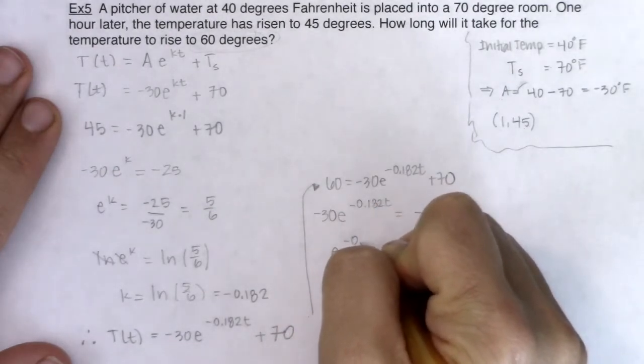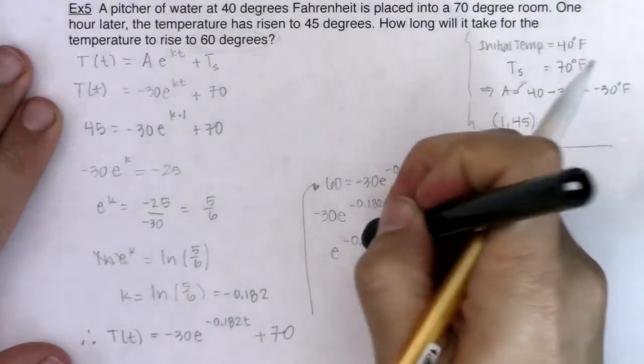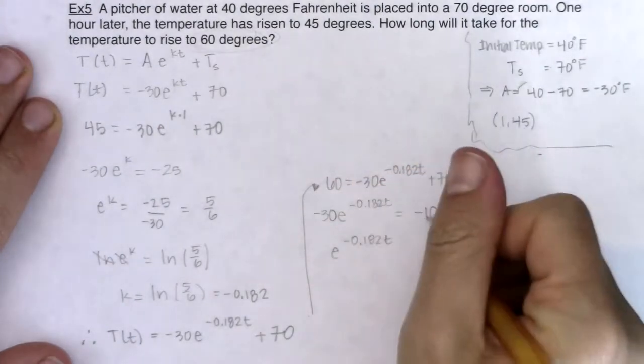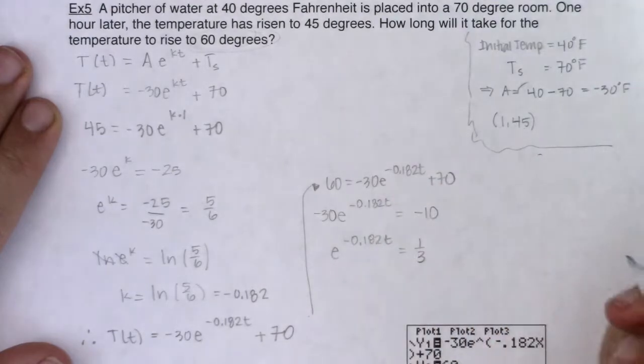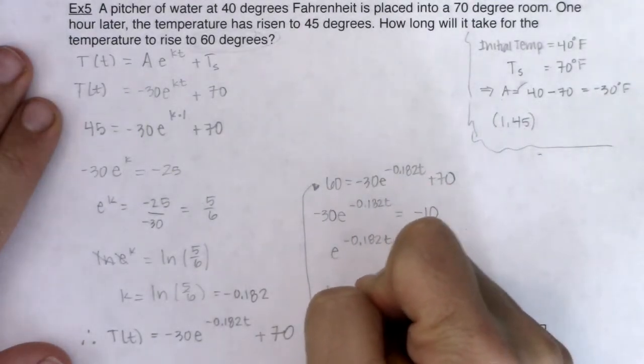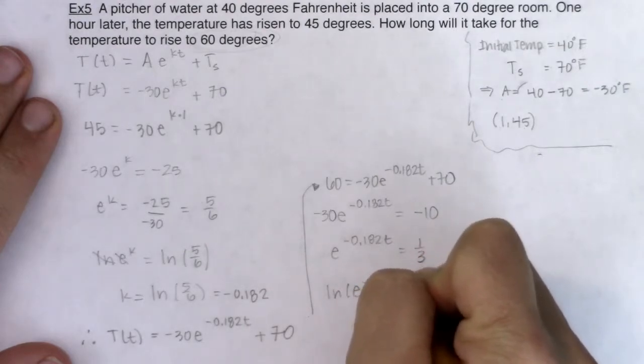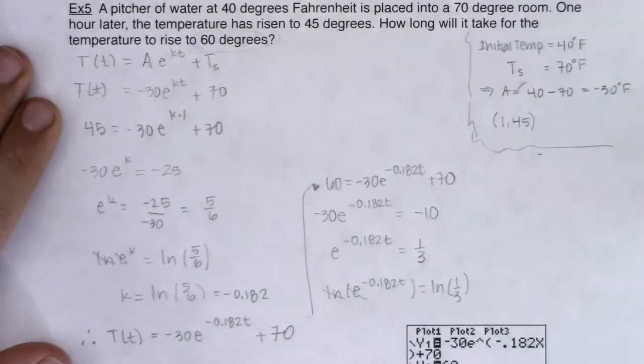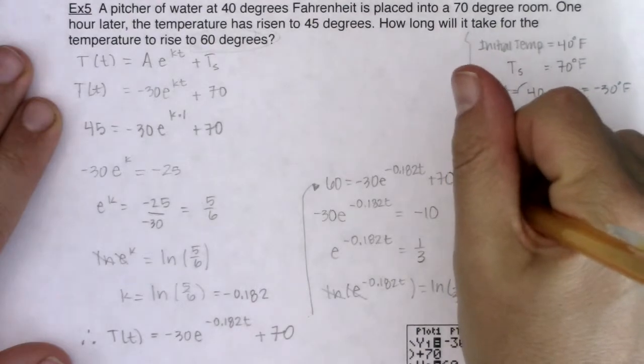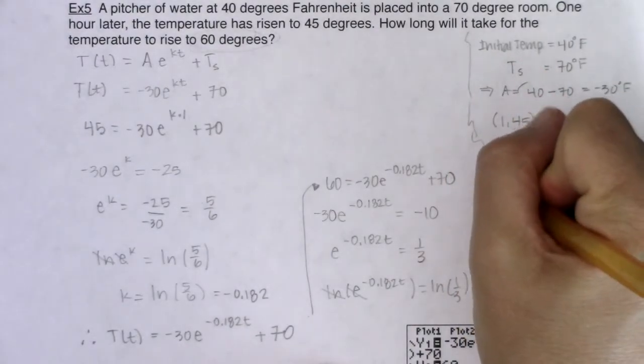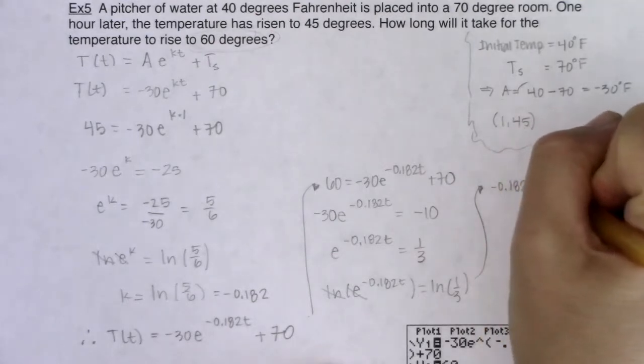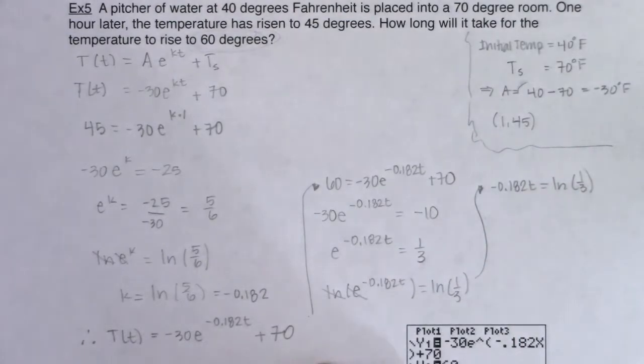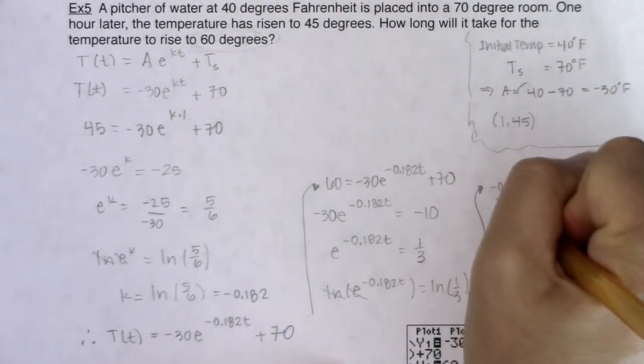I'm going to divide both sides by negative 30. So I will get e to the negative 0.182t. Negative 10 divided by negative 30 is positive one third. I'm going to take the natural log of both sides. When I take the natural log of both sides, these are going to cancel. And so let me just start to move this in over here. I'll try and write kind of small so I don't run out of room. I've got negative 0.182t equaling the natural log of one third.